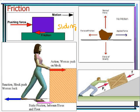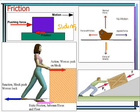Even when something is just sitting still, forces are acting on it. Gravity pulls it down, and the normal force pushes back up from the ground, keeping it from sinking further. If a force is applied one way, frictional force goes in the opposite direction. If friction equals the applied force — shown by equal-length arrows — the object will not move. If the applied force arrow is longer, the object slides.